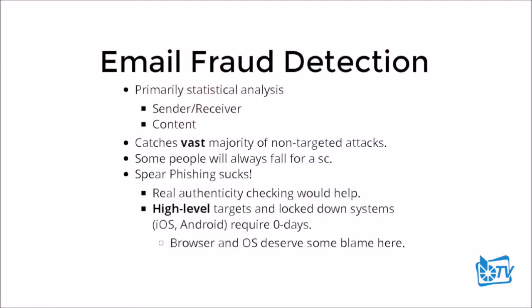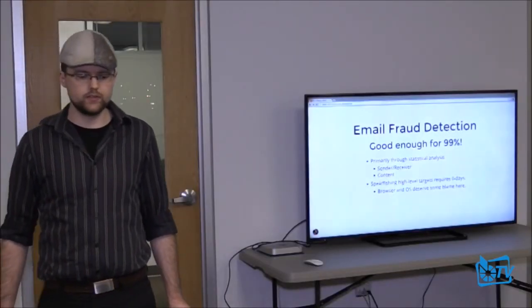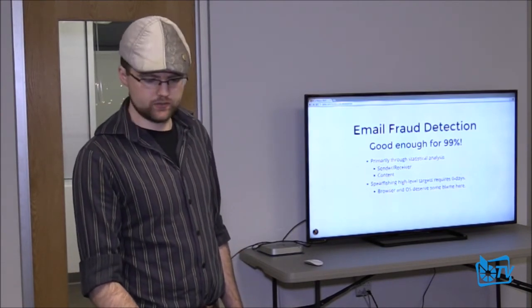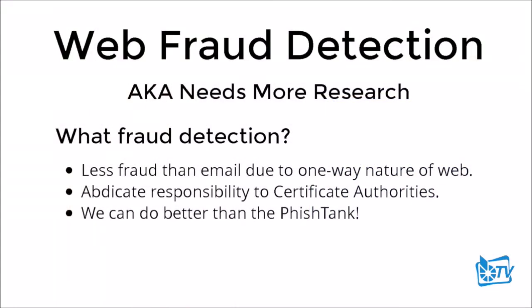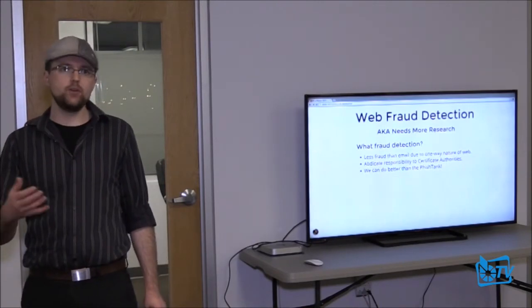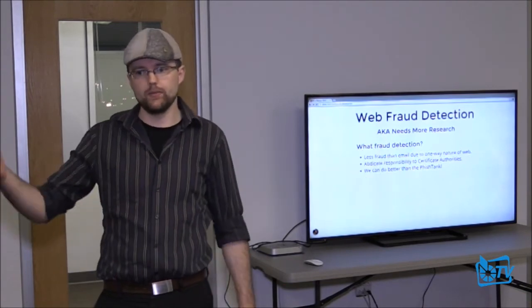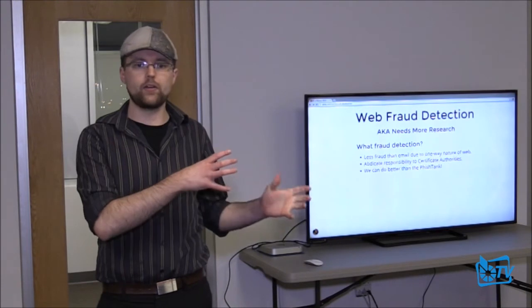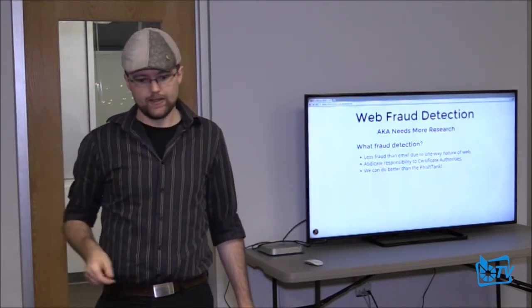If we break this problem down, we can start with authenticity and fraud detection as one major component. Email fraud detection is really pretty good — good enough for 99% of the time — done primarily through statistical analysis of sender, receiver, and content. Even spearphishing high-value targets like the RSA attacks requires huge zero-days. Web fraud detection really isn't much — it's all blacklist-based. On the web, there's less fraud because you mostly just go to sites via Google. It's usually from email that you get a malicious link that then owns you. But we can do much better than blacklist technologies.